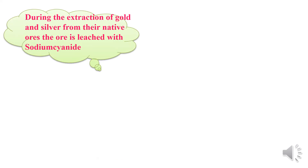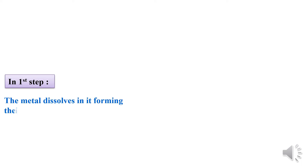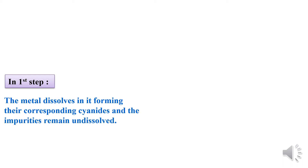During extraction of gold and silver, the ore is treated with sodium cyanide which acts as a leaching agent. When treated with sodium cyanide, complexes are obtained. The metal — gold or silver — is completely dissolved in the cyanide whereas the impurities remain insoluble. This is the leaching process: the metal is completely dissolved whereas the impurities remain undissolved.